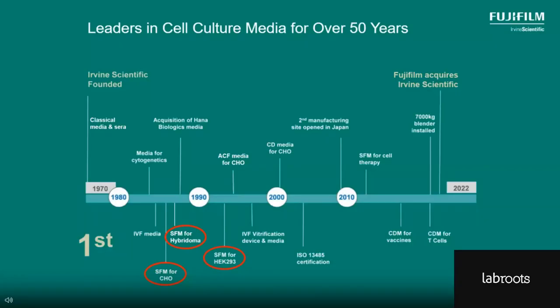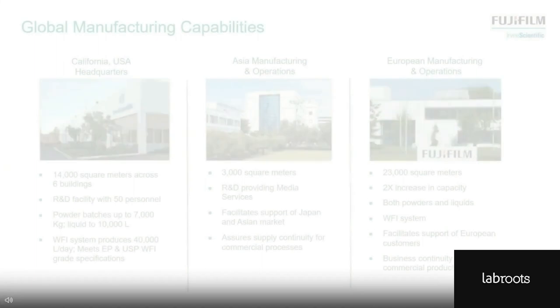As a company, Fujifilm Irvine Scientific has been involved in cell culture media for over 50 years. We're actually one of the very first companies focused on developing and supplying cell culture media. We represent a company that was first in developing serum-free media for CHO, serum-free media for hybridoma cells, and serum-free media for HEK293 cells. We've been very busy finding ways to improve media continuously and keeping up with the needs of the industry.